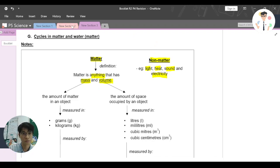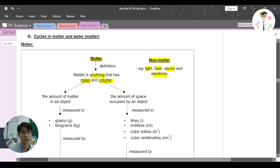Let's come back to matter. What does mass actually mean? Mass basically means the amount of matter in an object. And volume means the amount of space occupied by an object.